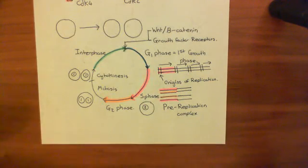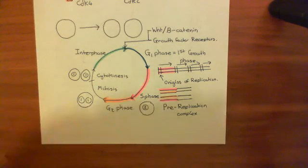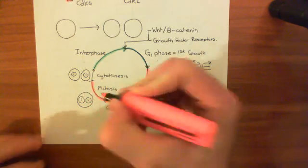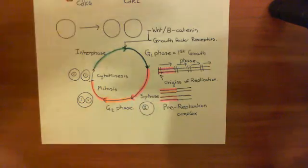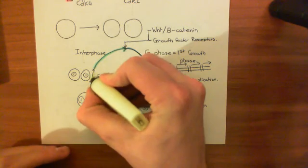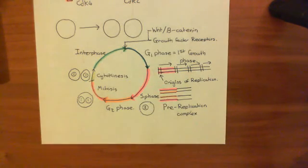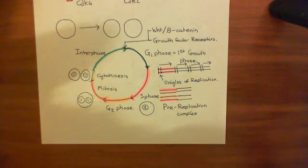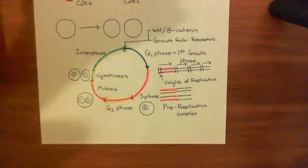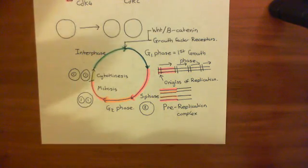So those are the final steps of the cell cycle. We now need to discuss cyclin-dependent kinases and how they are important in the cell cycle, but we'll cover that in the next video.